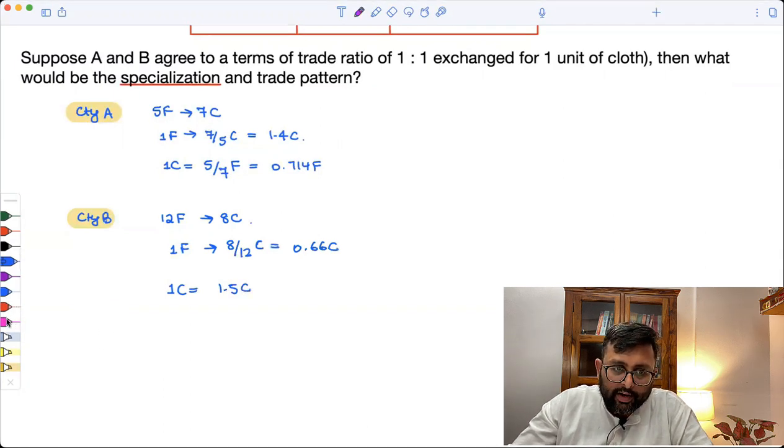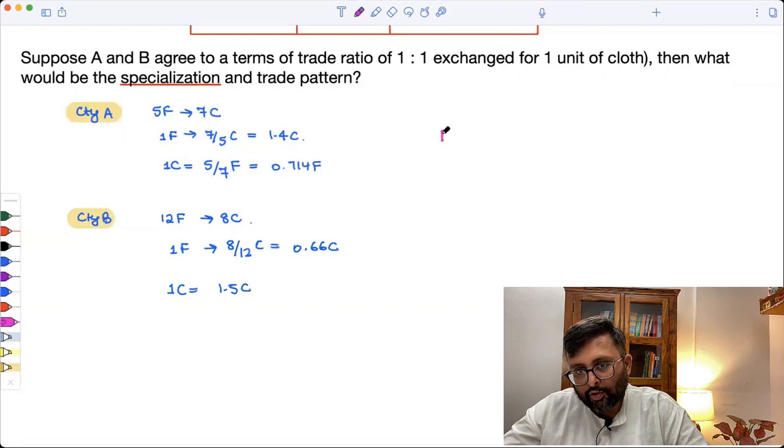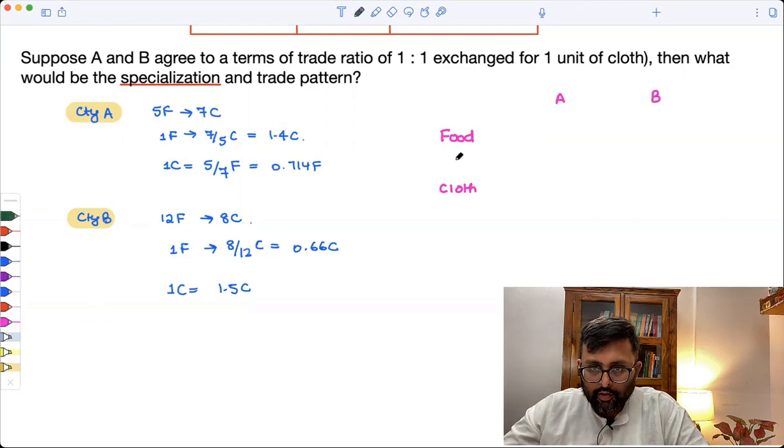Now I can write this in a table. These opportunity costs. So I have food here, I have cloth here, the two countries A and B. Right. So the opportunity cost of food in country A is 1.4C.